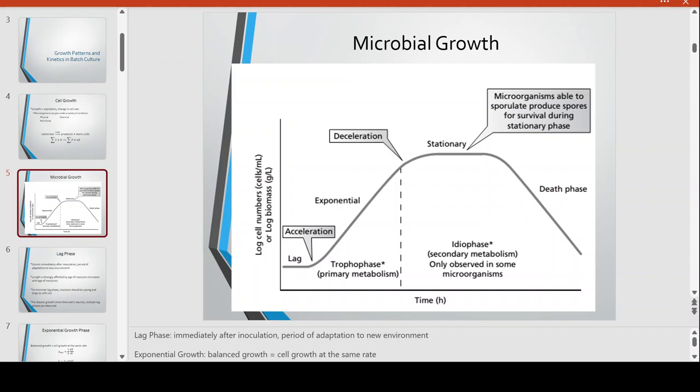After the lag phase, there is an acceleration of growth where we enter the exponential phase, also called the balanced growth phase. It is balanced because the growth of the cells during this phase is at the same rate, resulting in a very linear line on the logarithmic curve.